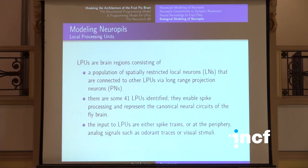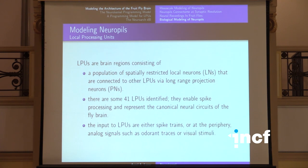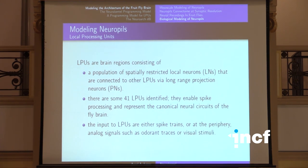There are various levels of attacking the problem from a neurobiology standpoint, and there is a lot of data. The first step in modeling is neurobiology modeling in terms of the neuropils and their abstract language — local processing units consisting of local neurons and projection neurons. Projection neurons extend their axons to other LPUs, whereas local neurons stay within the neuropil. There are roughly 40 LPUs providing either spiking information or graded potentials — for instance, in vision.